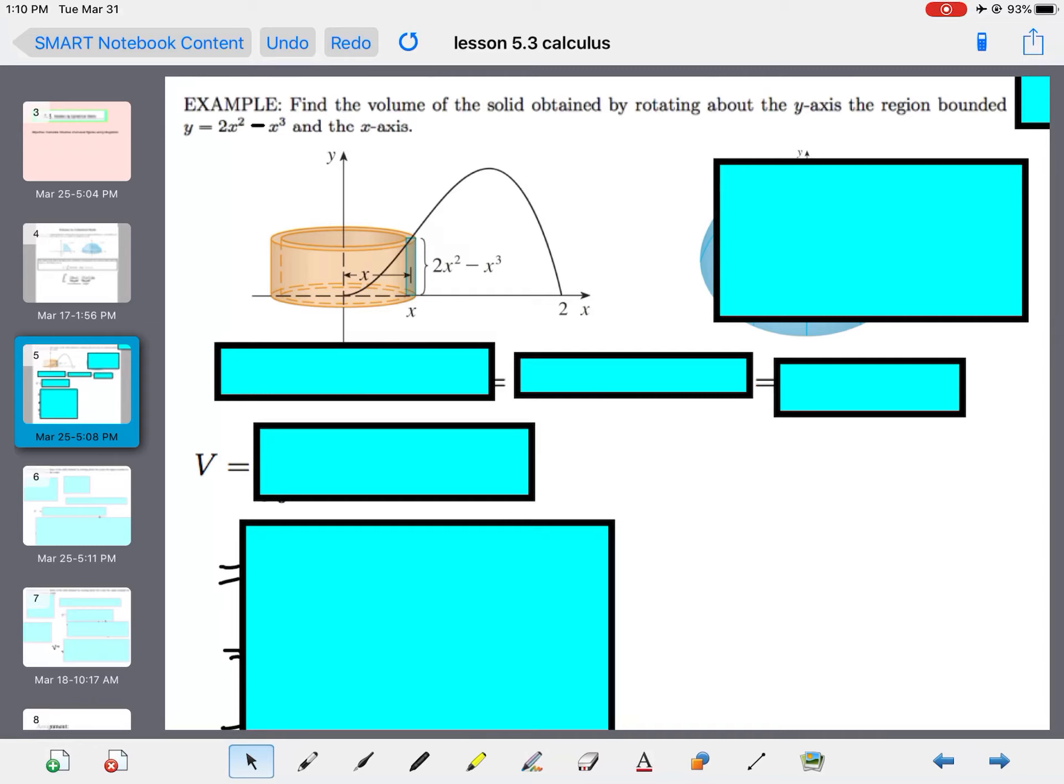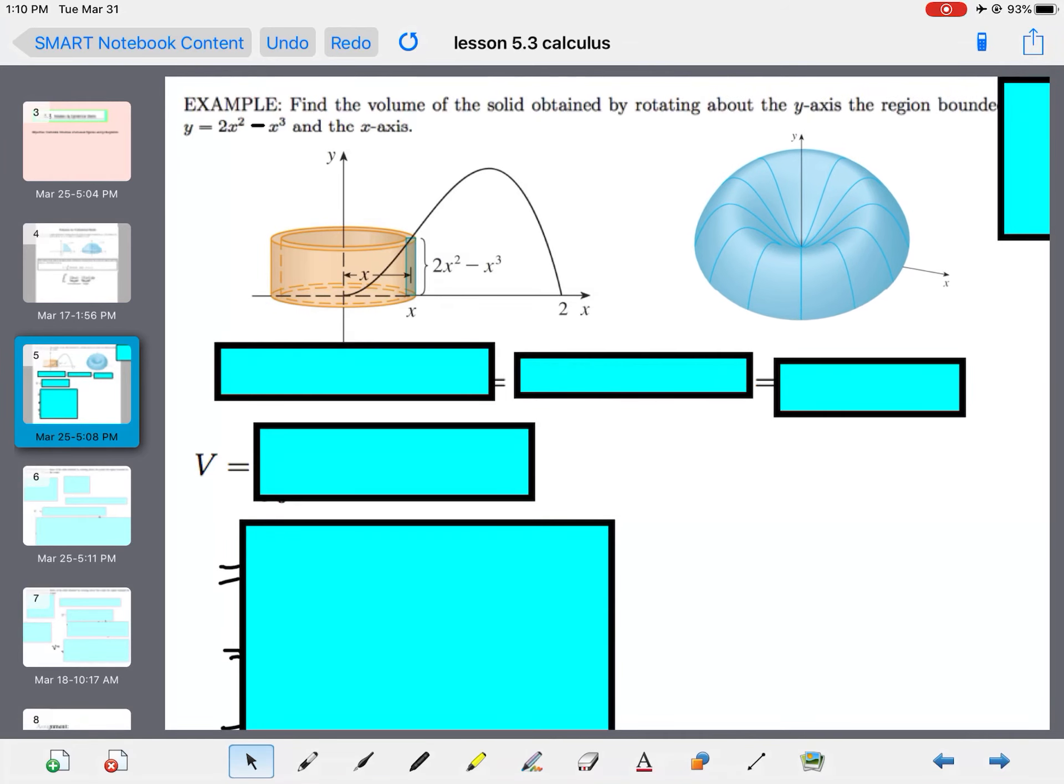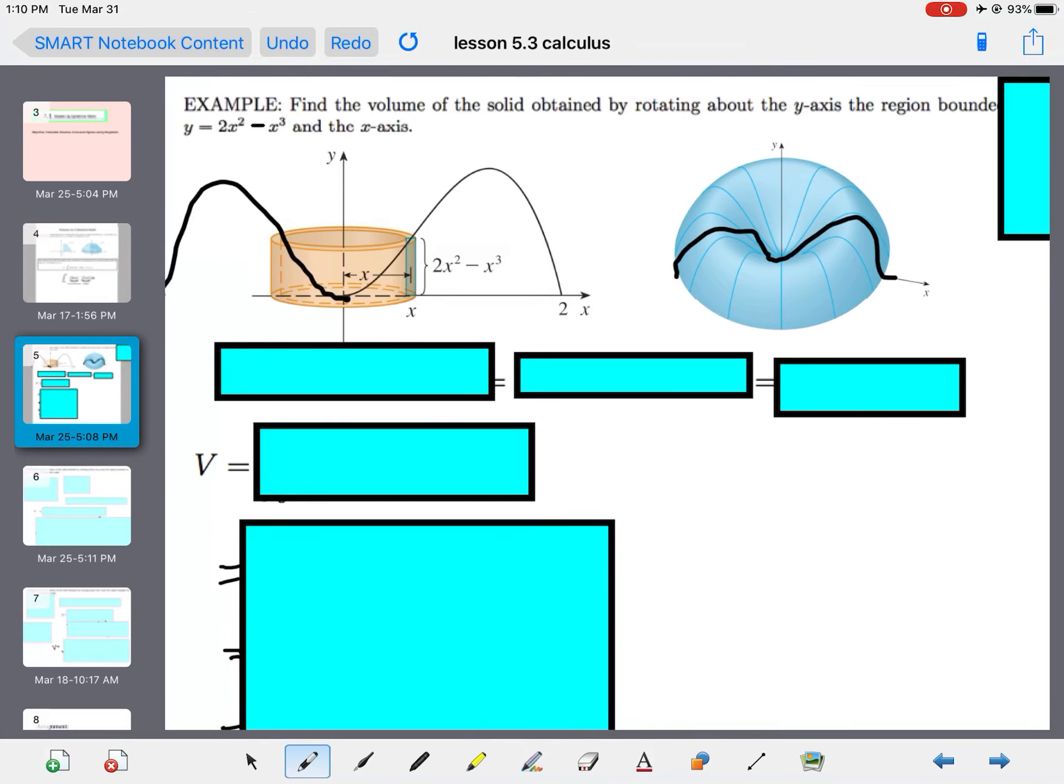So, what you always want to do is draw a picture. So, here's a picture. So, we've got 2x squared minus x cubed. And we're looking at the root, the section between the x-axis. So, that's that little section right there. And then we're going to rotate that about the y-axis. So, you get something like that. Think about, I like to kind of even draw, over here and see how it has that little dip about it.